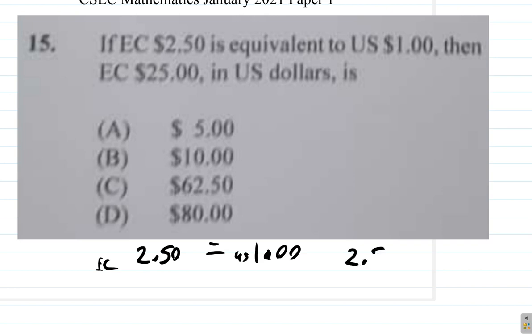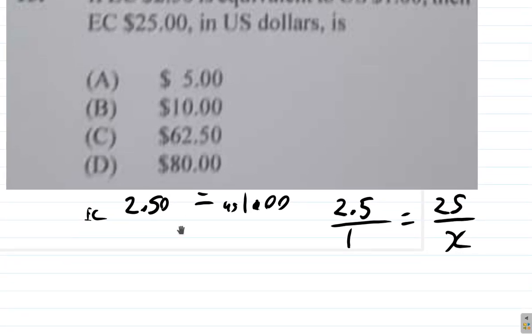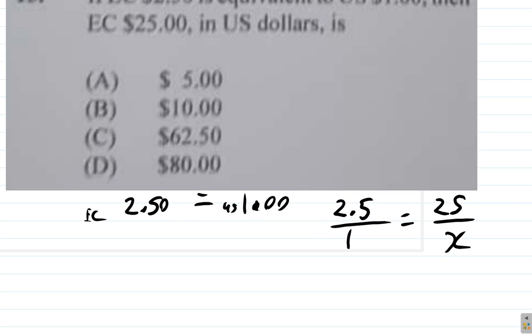2.5 EC over 1 US is equal to 25 EC over X US, you don't know how much. So you can calculate X from there.